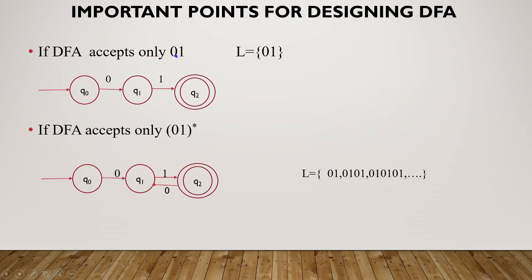Next, DFA accepts only 0, 1 — that is the literal string 0 followed by 1. Either 0 followed by 1. If input is 0 then 1, you accept. Q0 on input 0 goes to Q1. Q1 on input 1 goes to Q2, which is the accept state. This is the original DFA. Q0 — on 0 go to Q1; Q1 — on 1 go to Q2, which is the accept state.